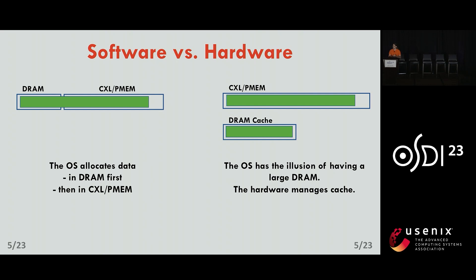What does this mean for the operating system? When the tiers are managed purely in software, the operating system sees both DRAM and the slow tier. When allocating memory, it allocates data first in DRAM, and then, when all DRAM pages have been allocated, it starts to allocate data in the slow tier. When the tiers are handled by hardware, all the operating system sees is that it has a lot of DRAM, but it doesn't really know if the data will be in actual DRAM or in the slow tier.